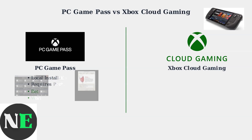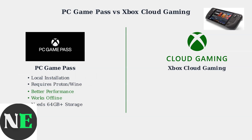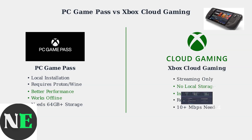PC Game Pass requires a Windows compatibility layer, like Proton or Wine, to run Windows games on the Steam Deck's Linux system. Games are downloaded locally, offering better performance and offline play, but you'll need at least 64 GB of available storage space.